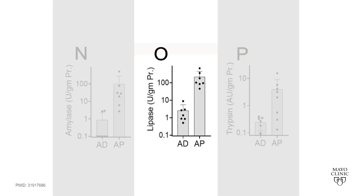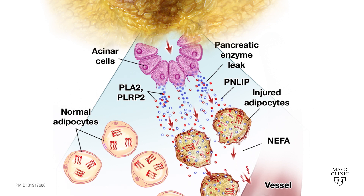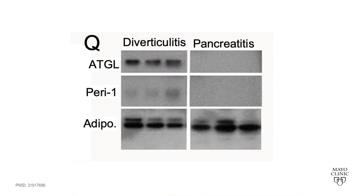We also noted that there was an increase in the amount and activity of pancreatic lipase in this necrosed fat from pancreatitis. This suggested that PNLIP had leaked from the damaged pancreas into the necrosed fat. Interestingly, the main adipocyte lipase, called ATGL, was not detectable in the fat of pancreatitis, while it was still present in diverticulitis.